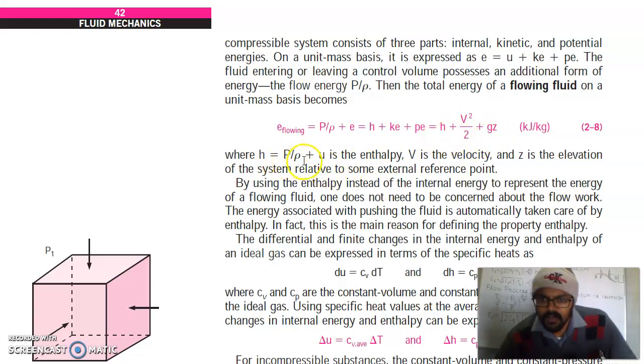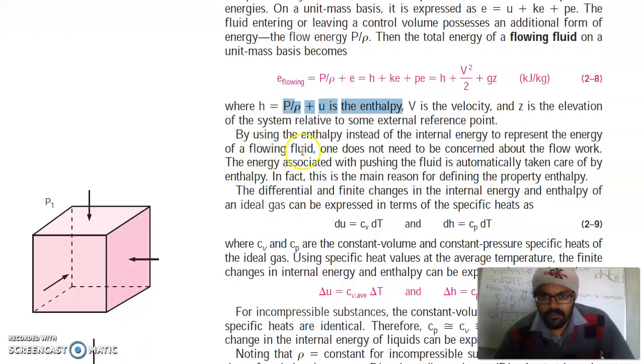Where H is enthalpy, P over rho, which has the same unit as pressure times volume since rho is the inverse of volume. V is the velocity and z is the elevation of the system relative to some external reference point. By using enthalpy instead of internal energy to represent the energy of a flowing fluid, one does not need to be concerned about the flow work. The energy associated with pushing the fluid is automatically taken care of by enthalpy. In fact, this is the main reason for defining the property enthalpy.